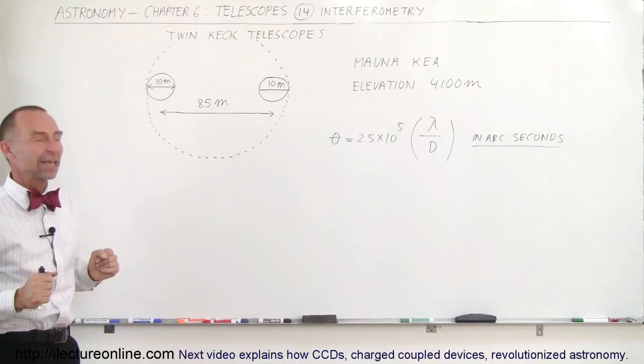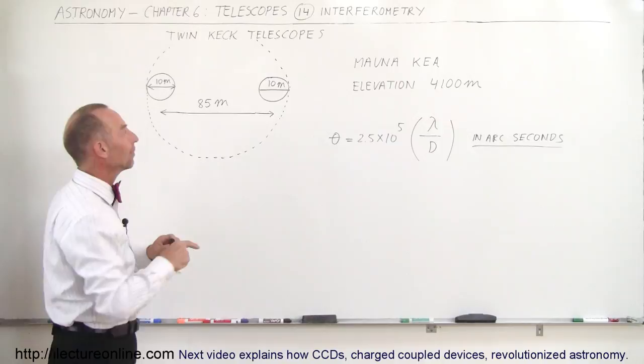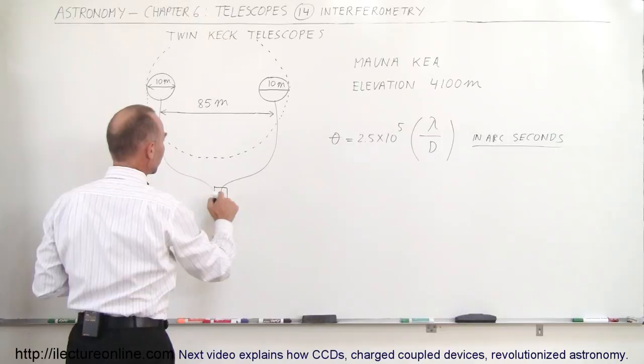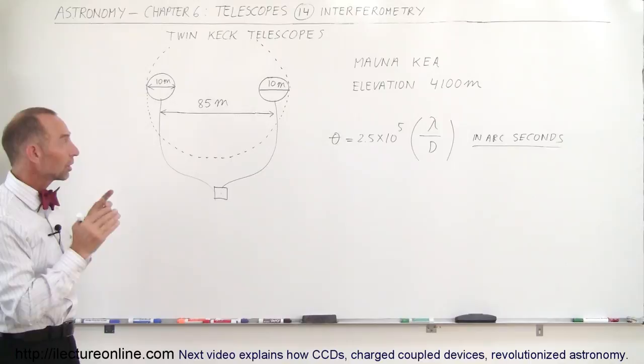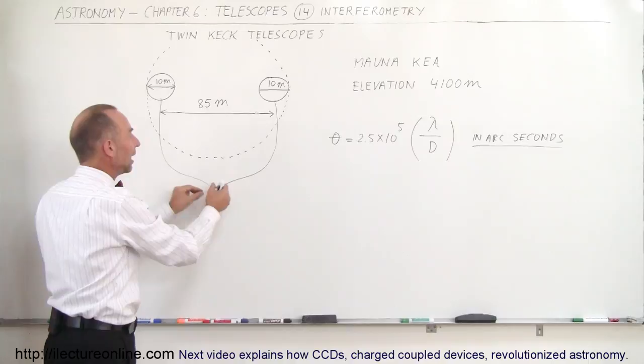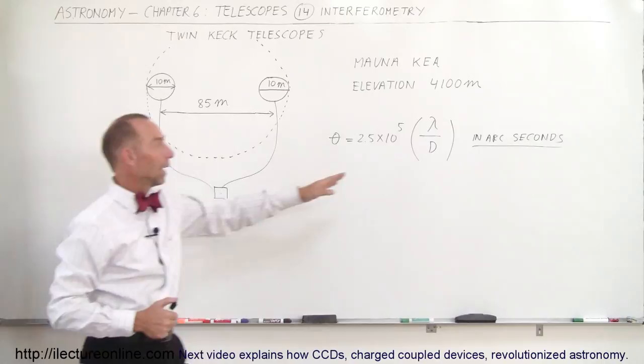Instead of using 10 meters as diameter, when we use both of them at the same time, both of them would be hooked up via computer—a big processing unit which would take the two images at the same time trained to the same object. We look at the same object with the two telescopes at the same time, feed those images into a computer and process it together. By doing that we actually increase the resolution and we can put 85 down there instead of 10 and have even a smaller angle of resolution.